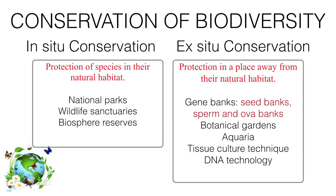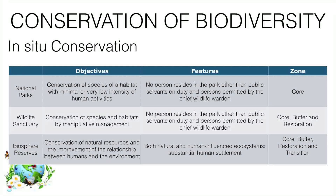In in-situ conservation there are three methods: national park, wildlife sanctuary, and biosphere reserve. The main objective of a national park is conservation of the species of a habitat with minimal or very low intensity of human activities. In national parks, human activities are not allowed — it is the core zone, so no person resides in the park other than public servants on duty and persons permitted by the chief wildlife warden.